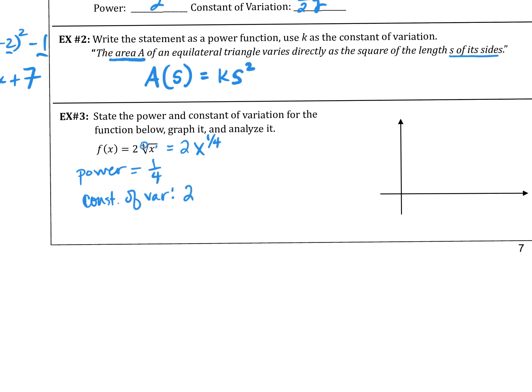We know what this function is going to do — it is a root. What does an even root function typically look like? The square root function started at 0 and curved this way. So this is going to look the same. If we plug 0 in, the 4th root of 0 is 0, and 2 times 0 is 0 — so we have a point at the origin.